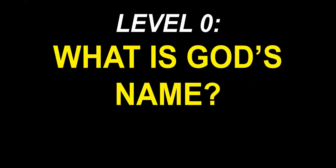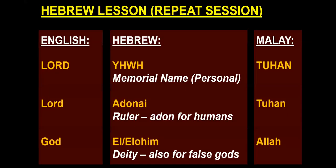We start with level zero: what is God's name? In your English Bibles you will see LORD in all capitals — this is from the Hebrew Yahweh. In Malay you translate it as Tuhan in all capitals. It's God's personal name, just like my name is Scott. The proper name of our God is Yahweh. You also see Lord with only the L capital — this is from the Hebrew word Adonai, meaning ruler or lord.